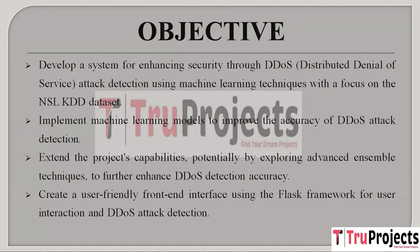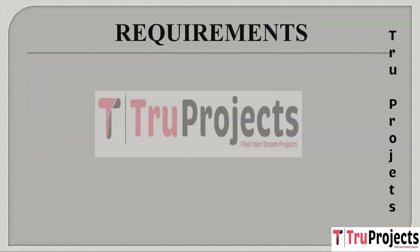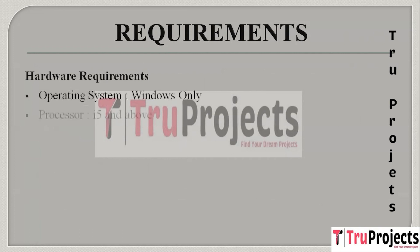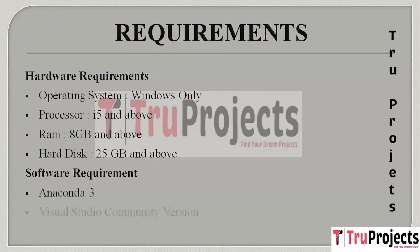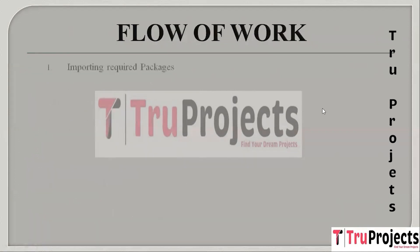The hardware requirements to execute this project are: operating system Windows, processor i5 and above, RAM 8GB and above, and hard disk 25GB and above. Software requirements are Anaconda 3 and Visual Studio Community version. Now the flow of work begins with the first step: importing required packages.